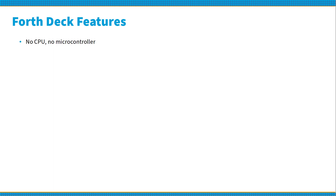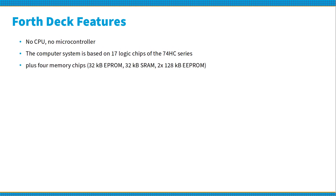The ForthDeck has no CPU and no microcontroller. The system is based on 17 logic chips of the 74 CMOS series and 4 additional memory chips. The computer has 32 KB ROM and 32 KB SRAM. Application programs and Forth source code can be stored in two EEPROMs.